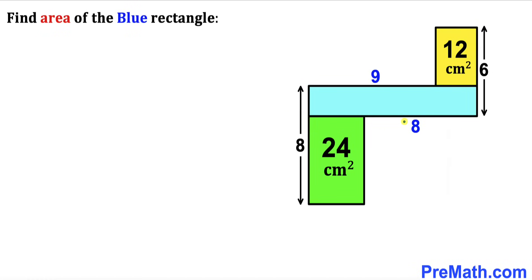Welcome to pre-math. In this video we have three rectangles put together as shown in the diagram, such that the area of the green rectangle is 24 cm², the area of the yellow rectangle is 12 cm², the vertical distance on the left side is 8 cm, the vertical distance on the right side is 6 cm, the horizontal distance for the blue rectangle is 9 cm and 8 cm. Our task is to calculate the area of the blue shaded rectangle.